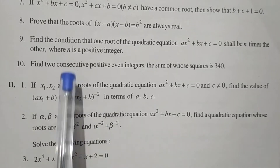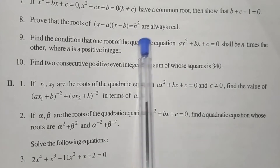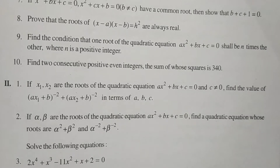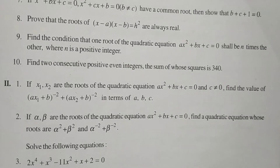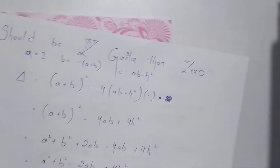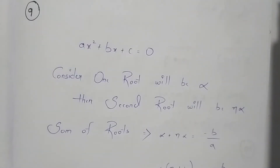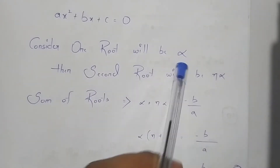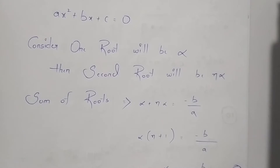The question says we need to find the condition for a quadratic equation such that one root is n times the other. The given equation is ax² + bx + c = 0. We consider one root as alpha, and since the other root should be n times, the second root must be n·alpha.